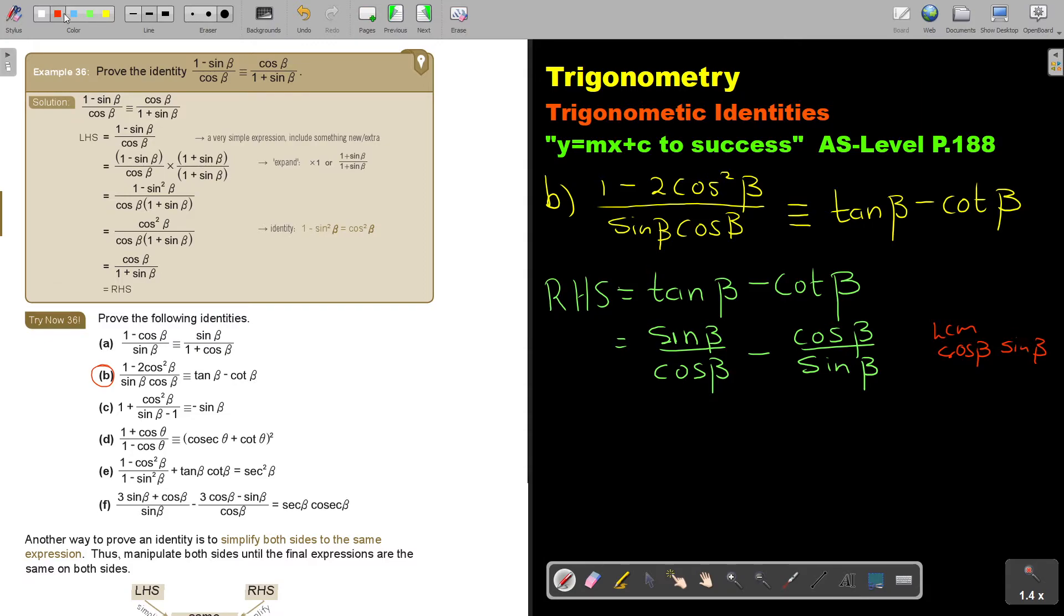So I'm going to multiply by sin beta, sin beta. Now I'm going to multiply by cos beta, cos beta.